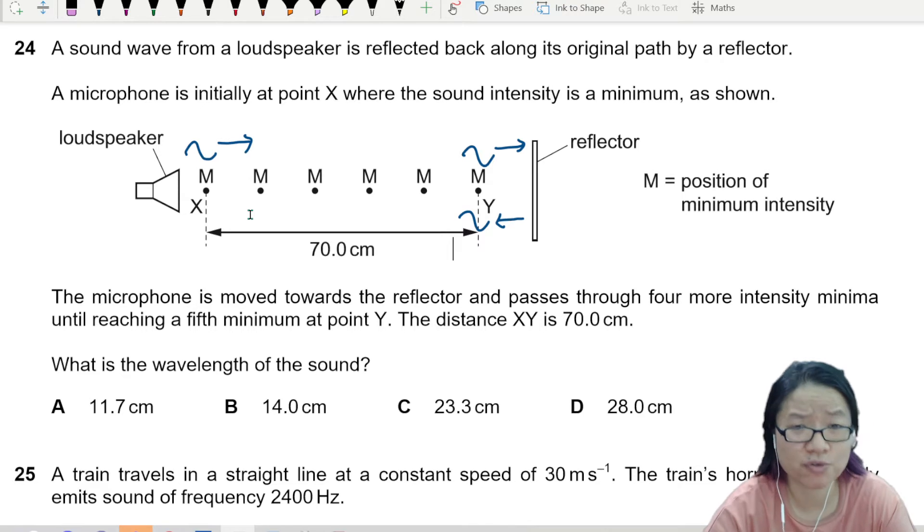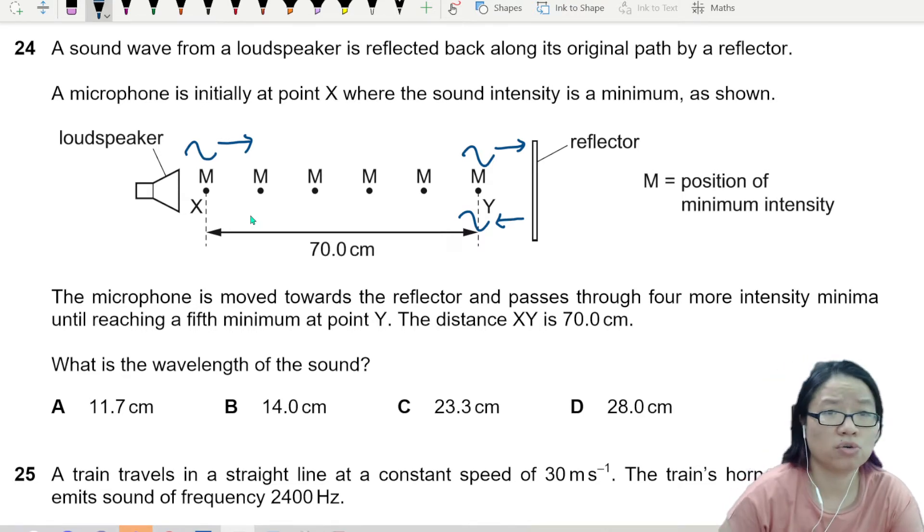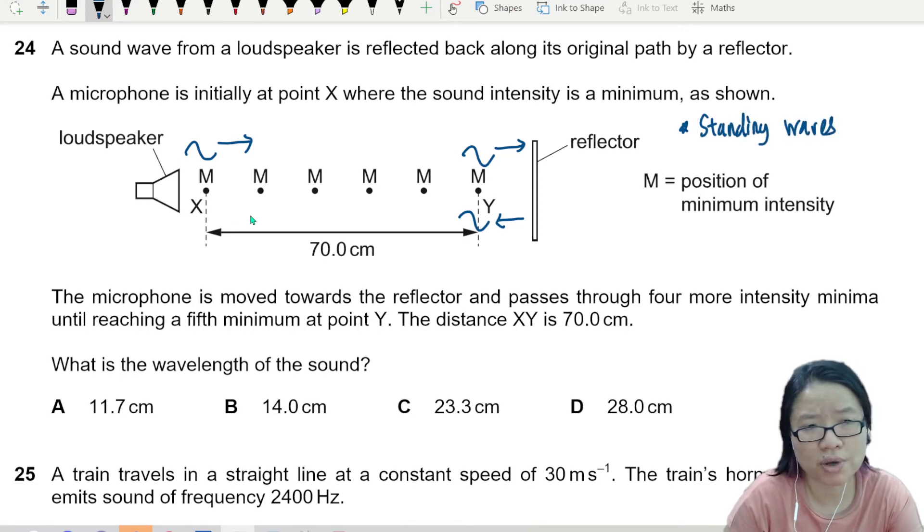This is a condition for standing wave. So if you can't tell that this is standing wave, then maybe you need to watch some lecture videos about standing waves. Whenever there's a reflector and two waves traveling in opposite direction, condition for standing wave is achieved.